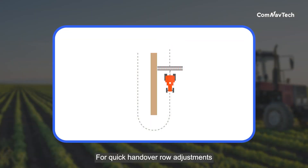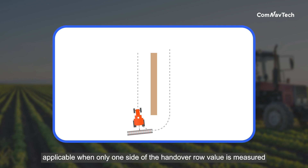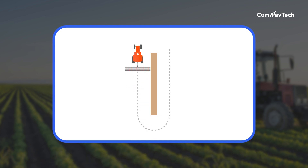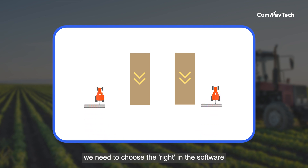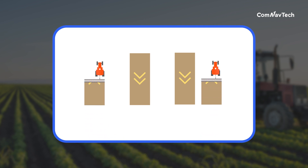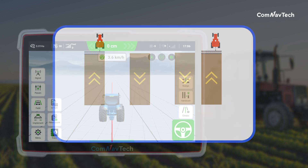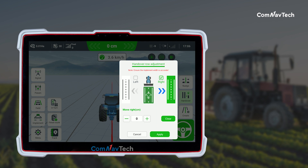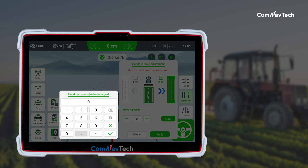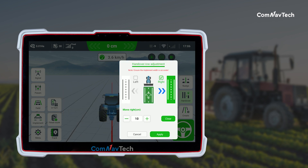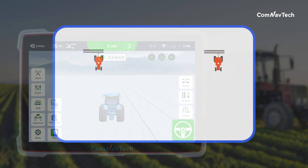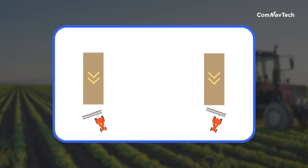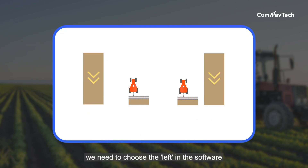For quick handover row adjustments, applicable when only one side of the handover row value is measured: if the issue is on the right side, choose 'right' in the software; if the issue is on the left side, choose 'left' in the software.